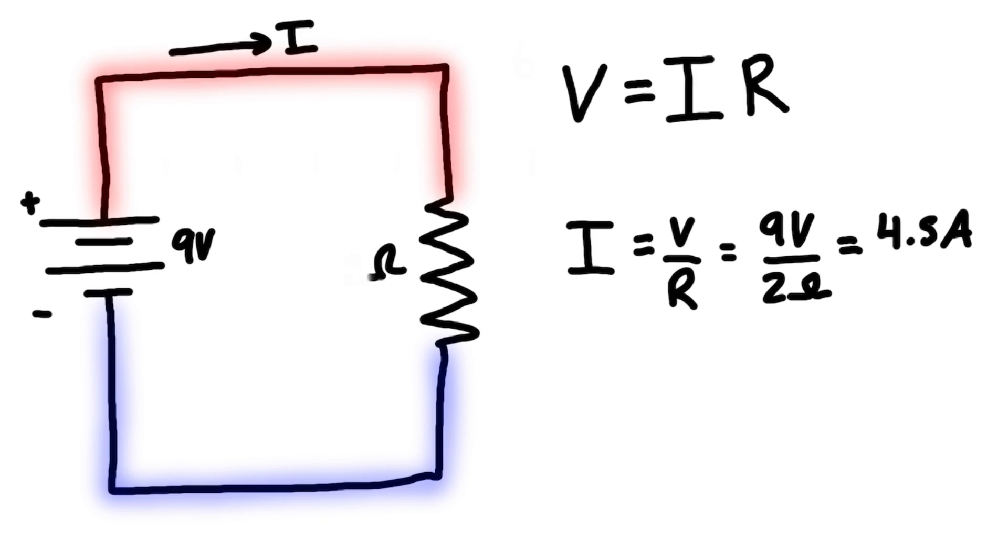Let's change our resistor from 2 ohms to 4 ohms, doubling the resistance. We update the resistance value, so 9 volts divided by 4 ohms equals 2.25 amps.